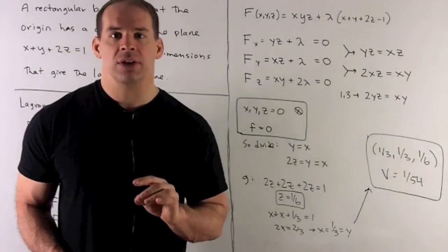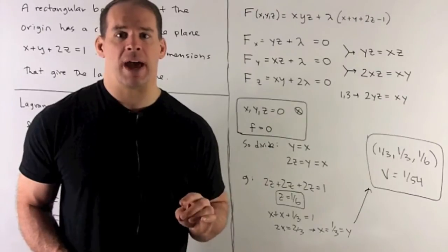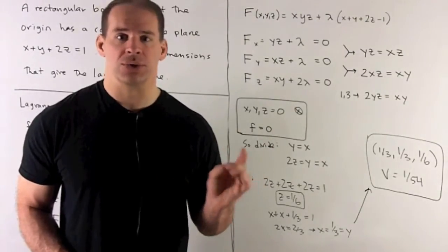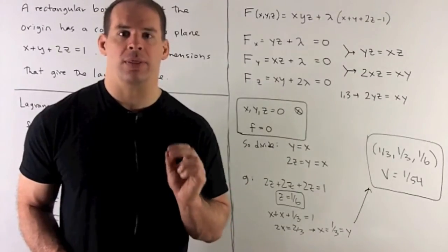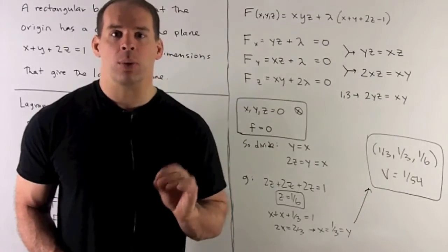I can go for x next. So y is equal to x. So I have x plus x plus 2 times 1 sixth is equal to 1, or 2x equals 2 thirds. x is equal to 1 third. Also, y is equal to 1 third because y equals x. So I get my point.